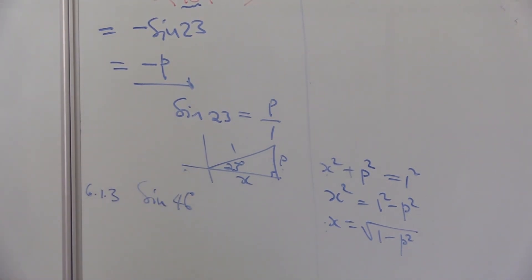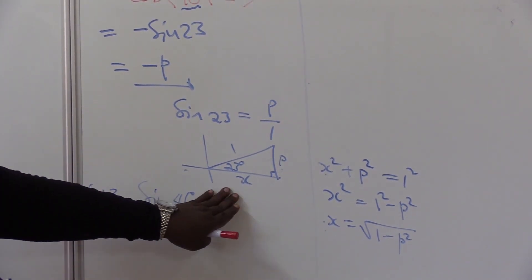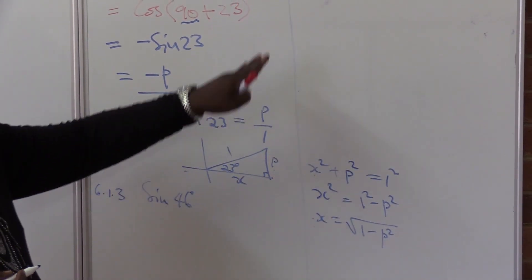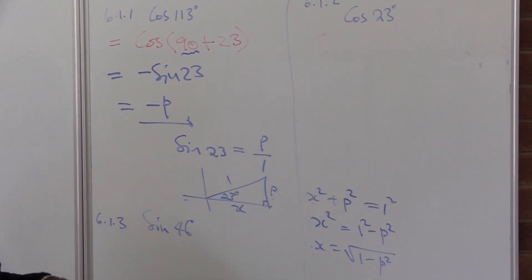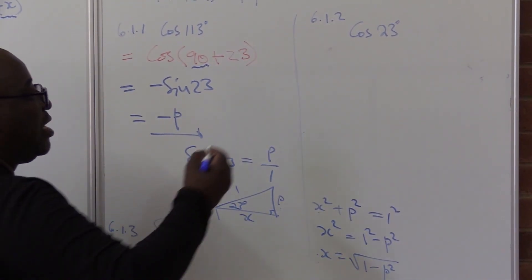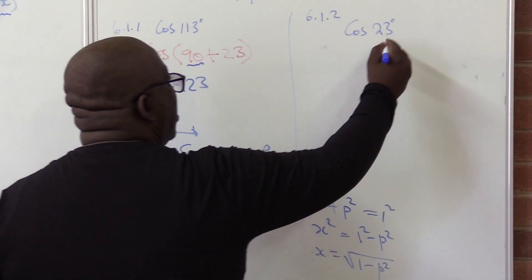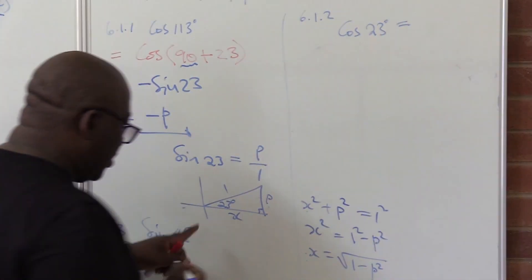This is how we go about finding this third one. I need the adjacent when I talk of a cosine - adjacent over hypotenuse. What is cosine 23 in this particular case? Cosine, adjacent. What is adjacent? It is my X, which is this one.